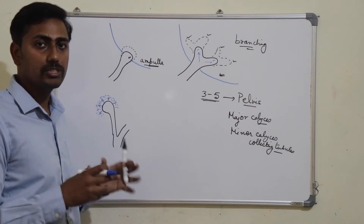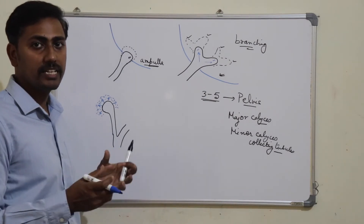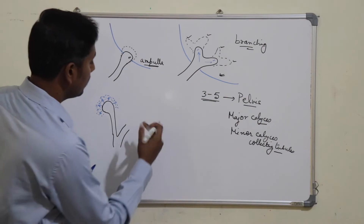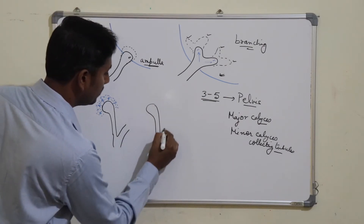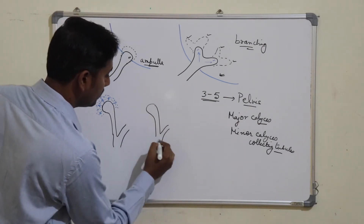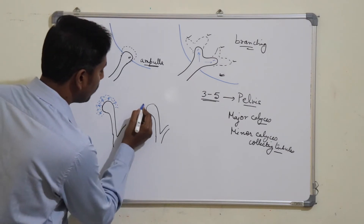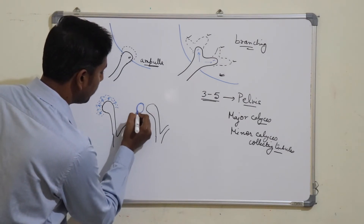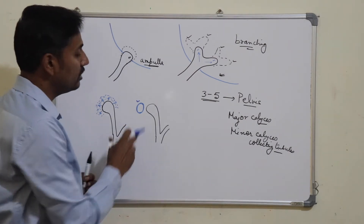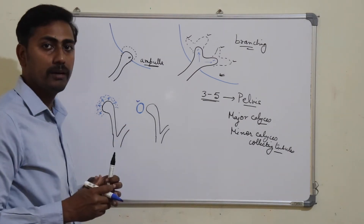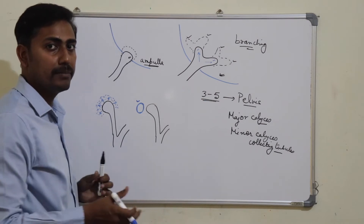The loose tissue of the metanephros will become solid or clump together to form clusters of cells. Each solid clump is converted into a vesicle. If this is the growing tip of the ureteric bud, a vesicle will be formed by the metanephros. This vesicle will soon become pear-shaped and open into the ureteric bud.